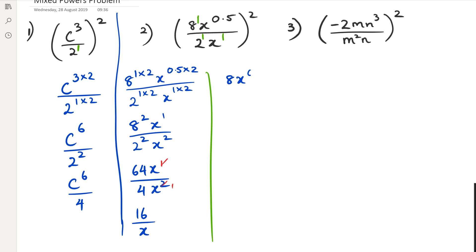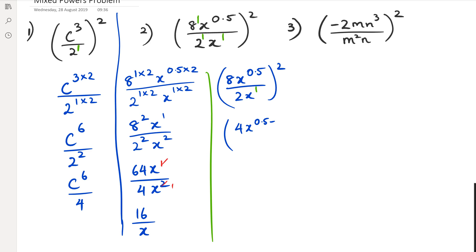So for the short way, what you have is 8x to the power of 0.5 over 2x, and then this is squared. The first thing you can do is get rid of the 8 and 2 and just replace it with 4. Also, you've got x to the power of 0.5 in the numerator and in the denominator you have x to the power of positive 1. So 0.5 minus 1 is going to give x to the power of negative 0.5.